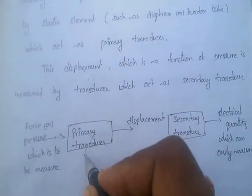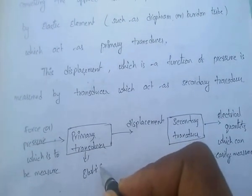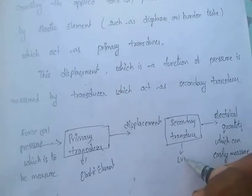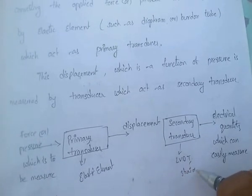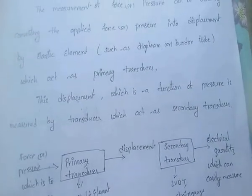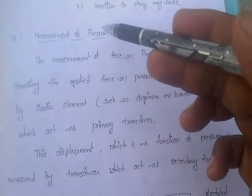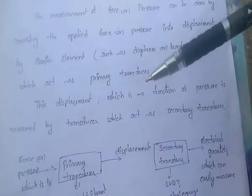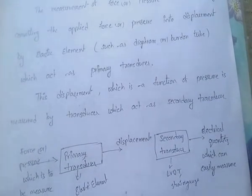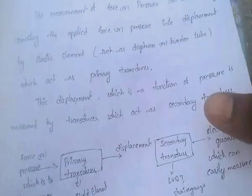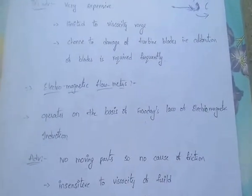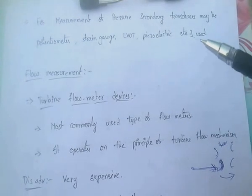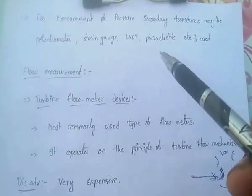The elastic element converts force or pressure into displacement, and that displacement can be easily converted to an electrical quantity by using a secondary transducer. The secondary transducer may be any transducer such as LVDT, strain gauge, potentiometer, or piezoelectric transducer. You can use any of these transducers as the secondary transducer.